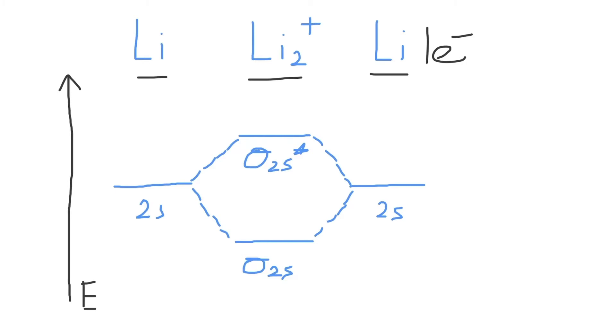So this becomes a positive cation, and now there are zero electrons here. And so combined, the Li2 plus molecule will now have one electron in total to go into the molecular orbitals.